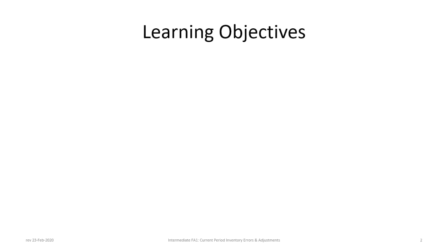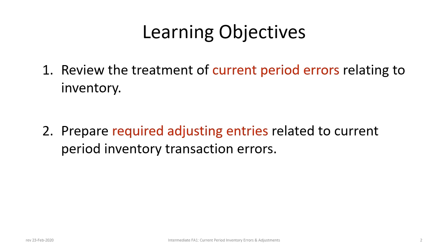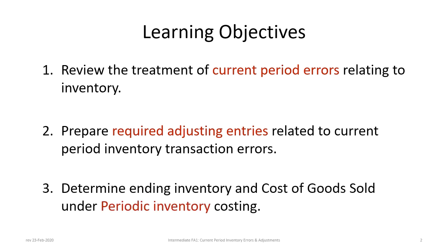There are three learning objectives for this tutorial. First, to review the treatment of current period errors relating to inventory. Second, to prepare adjusting entries required related to current period inventory transaction errors. And third, to determine the ending inventory and cost of goods sold under periodic inventory costing.